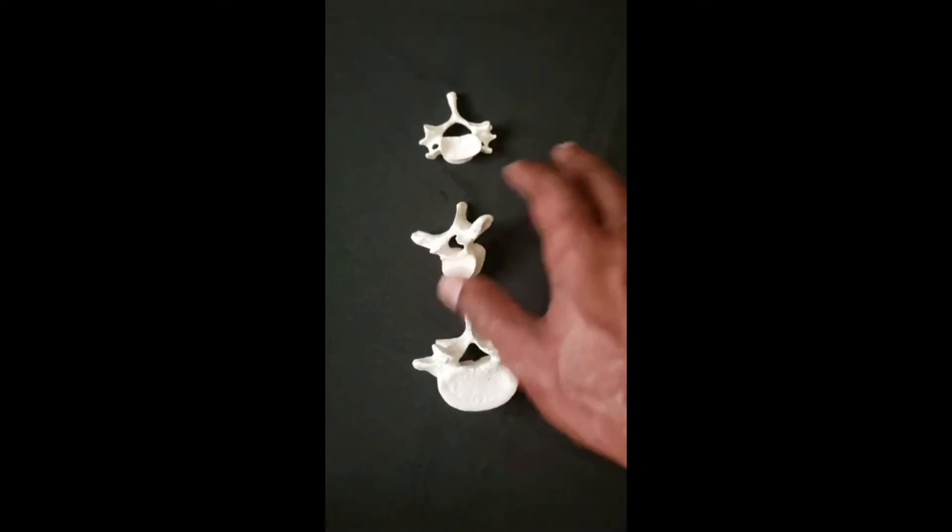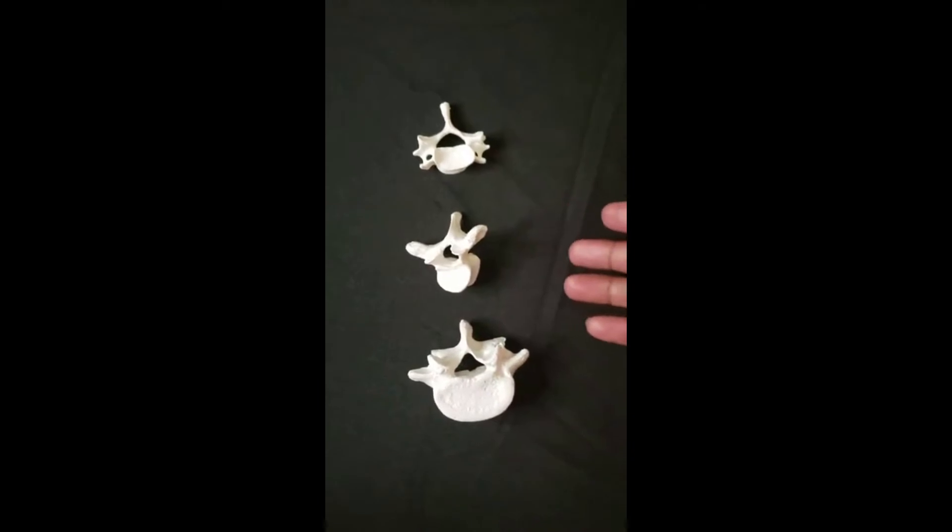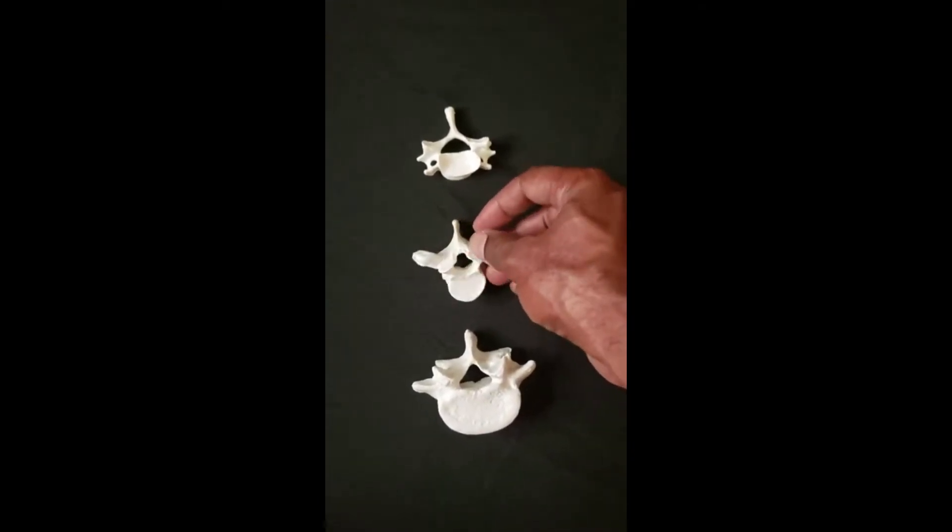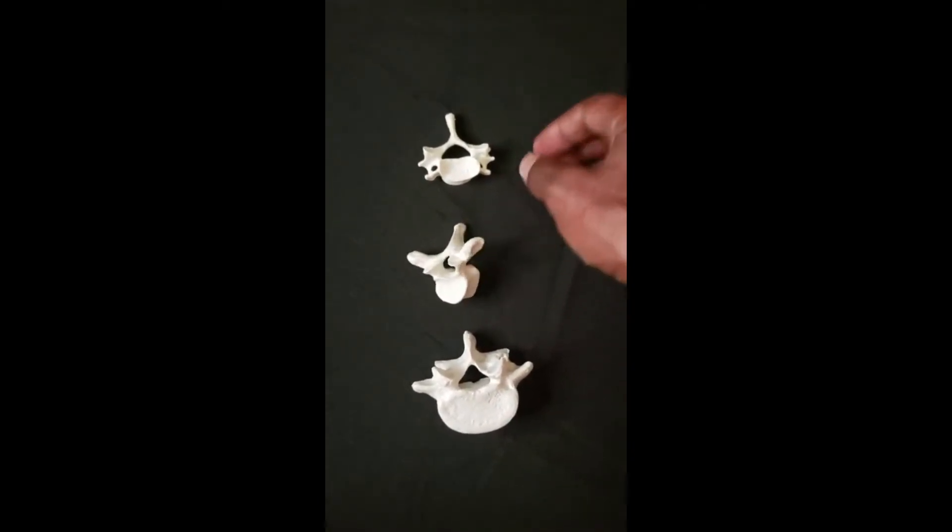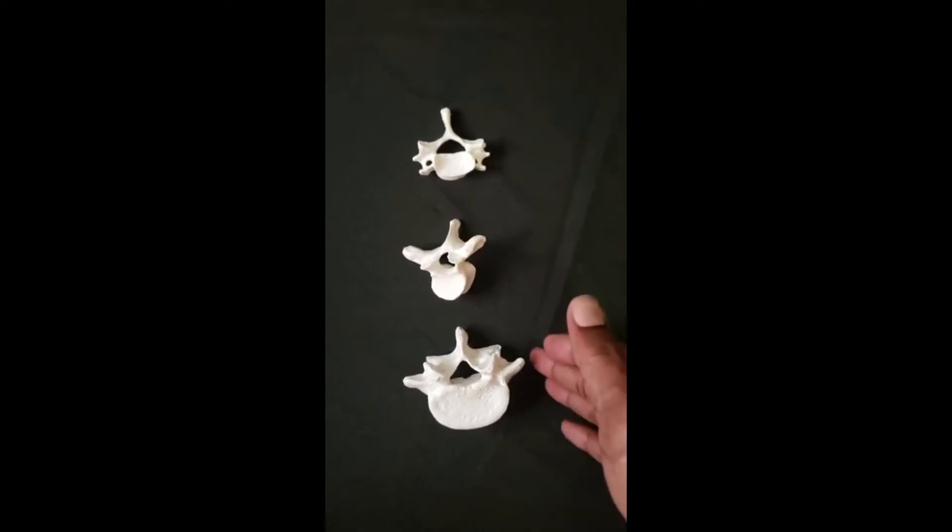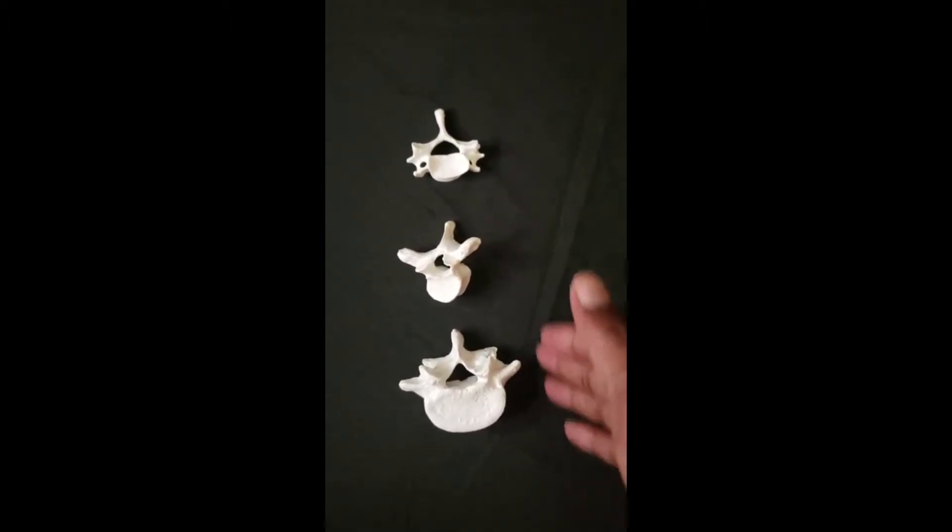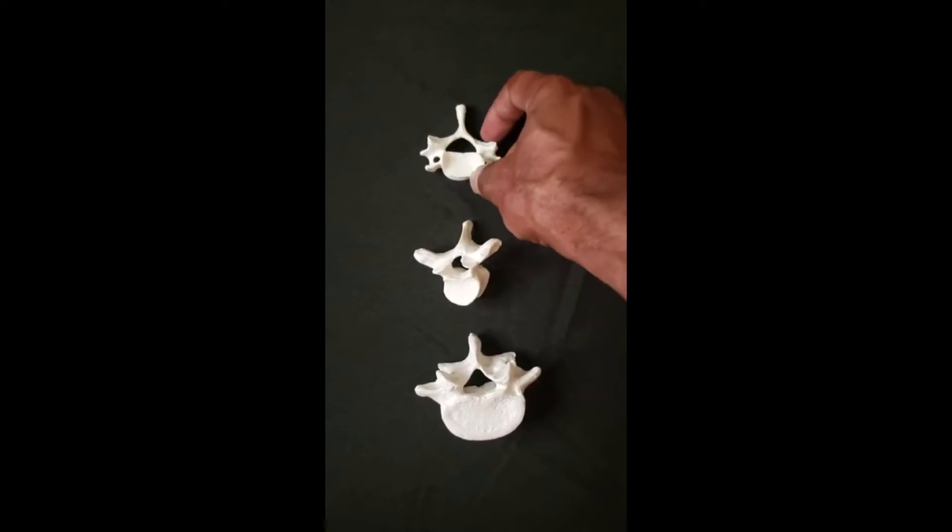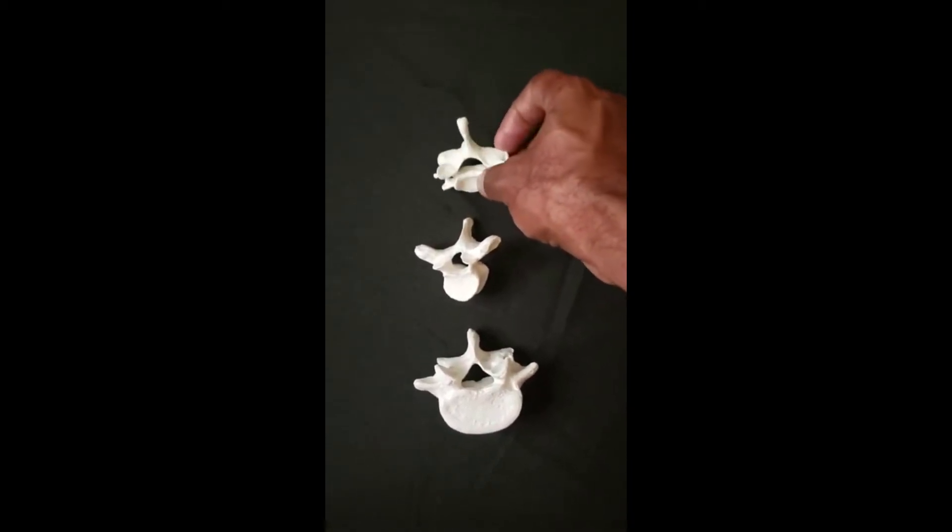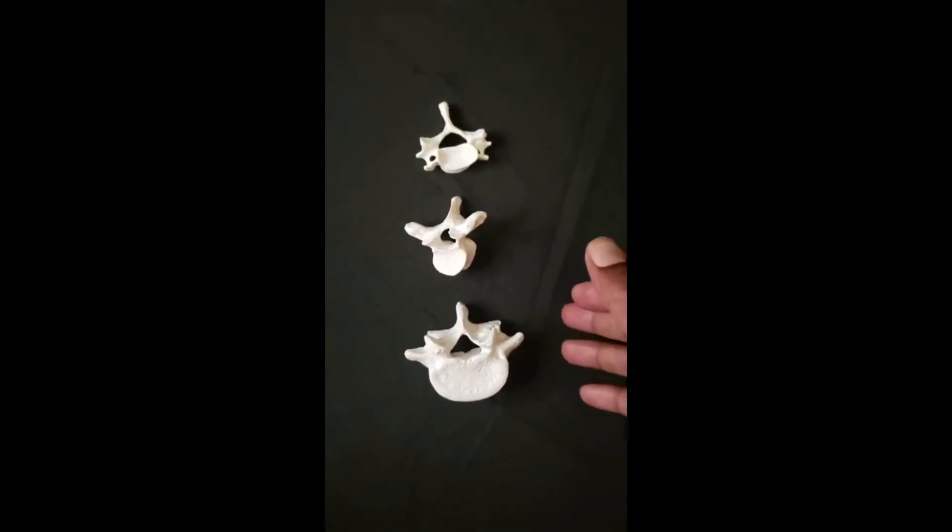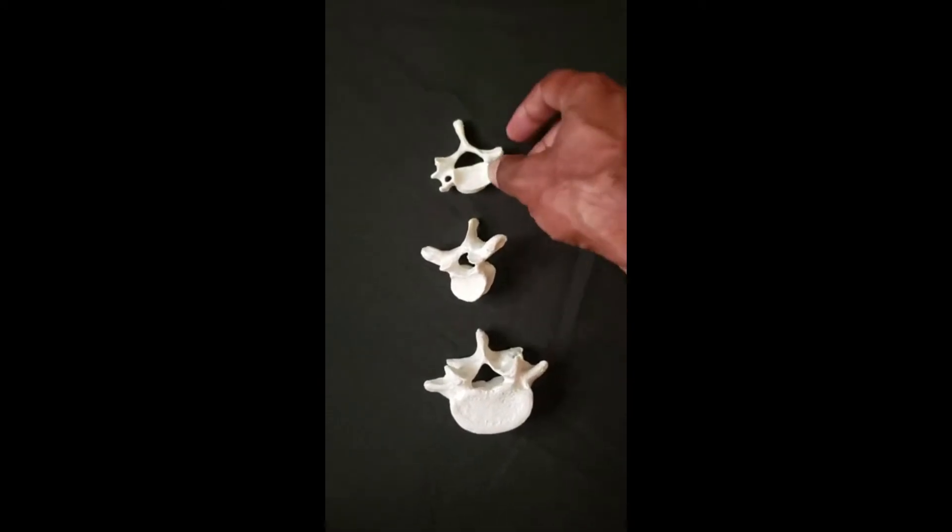You've probably heard some of what I'm about to say on a previous video or in your classes, so I'm not going to spend too much time on it. But you actually have 24 vertebrae, three different types, and one of the ways to remember how many of each type there are is the breakfast, lunch, dinner method.